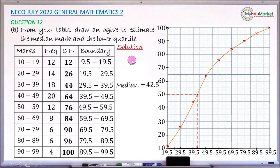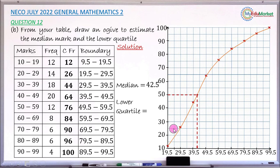For the lower quartile, take one quarter of 100, which is 25. Draw a horizontal line at cumulative frequency 25 to touch the ogive, then drop down to the horizontal axis. The lower quartile is 29.